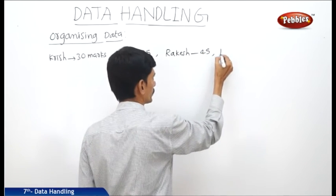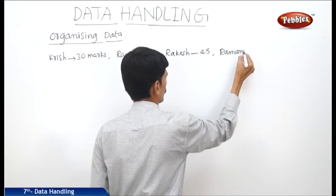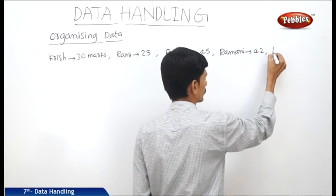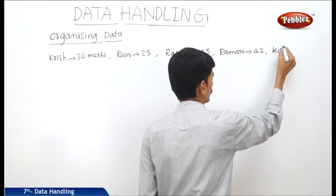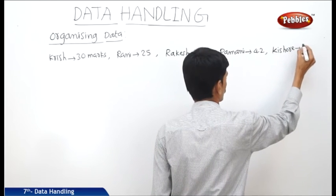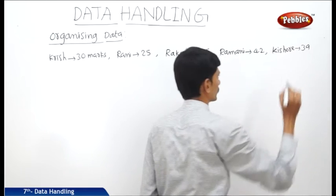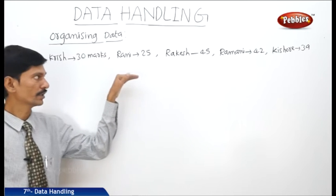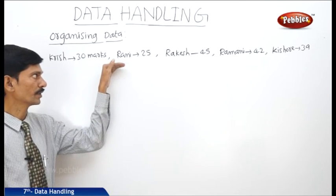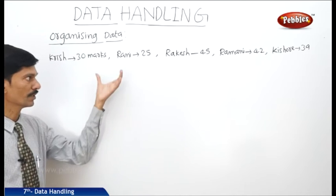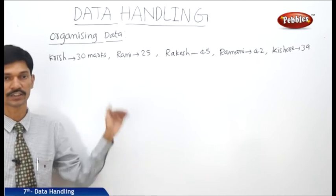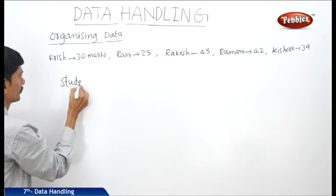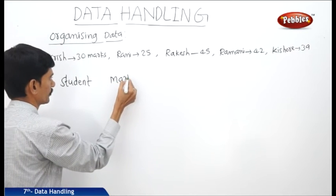Ramani has got 42 marks and Kishore has got 39 marks. So these are the marks of some students in a class in a formative assessment out of 50 marks. The same marks can be represented in another way using tables. Here we will take the student names in one column and the marks in another column.